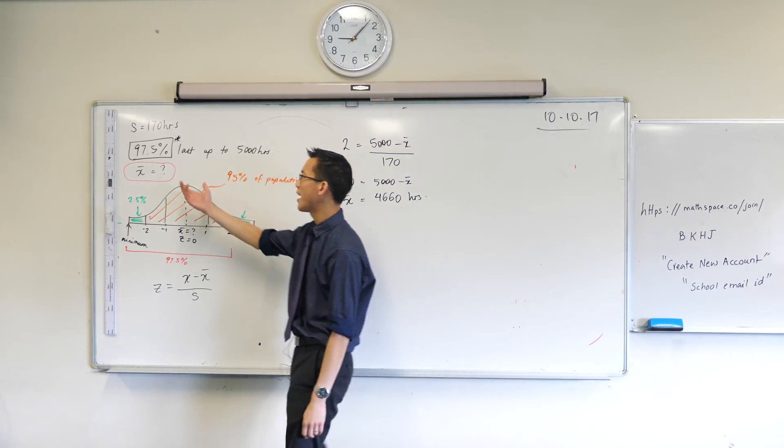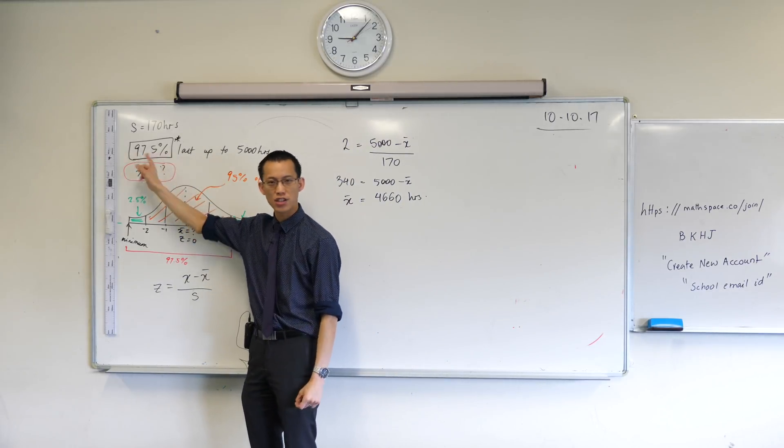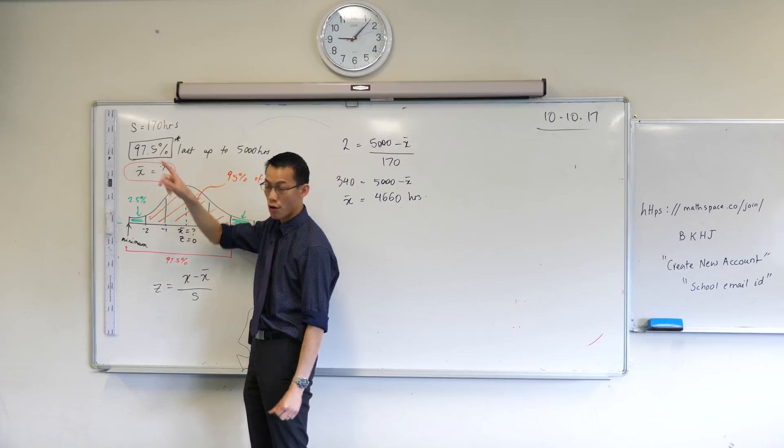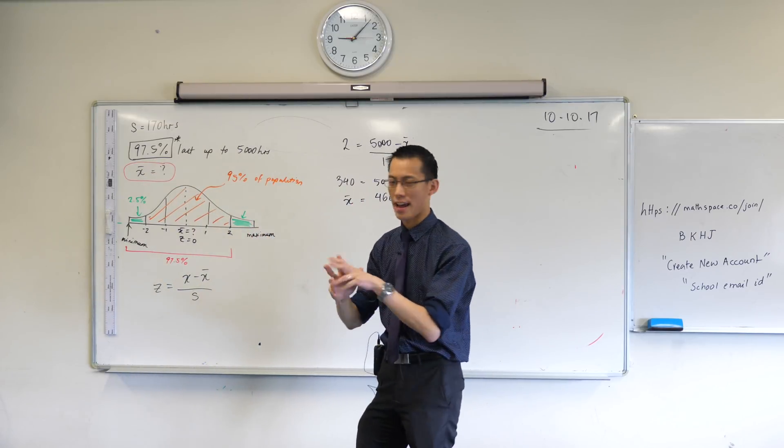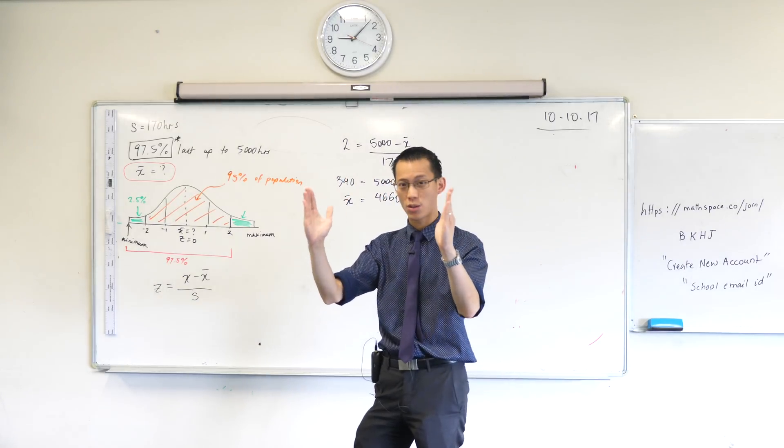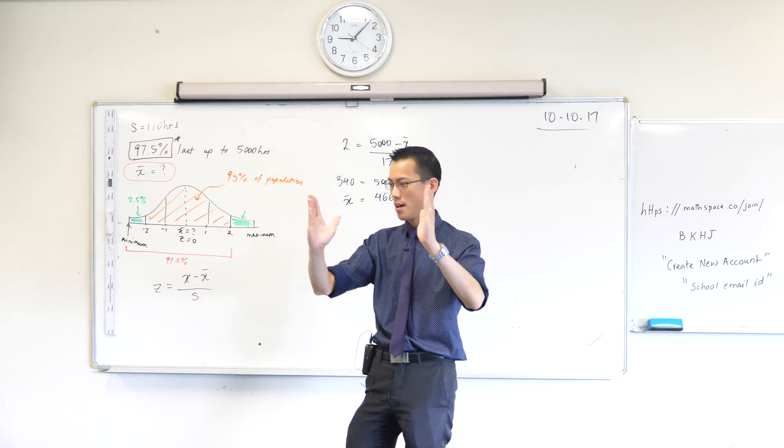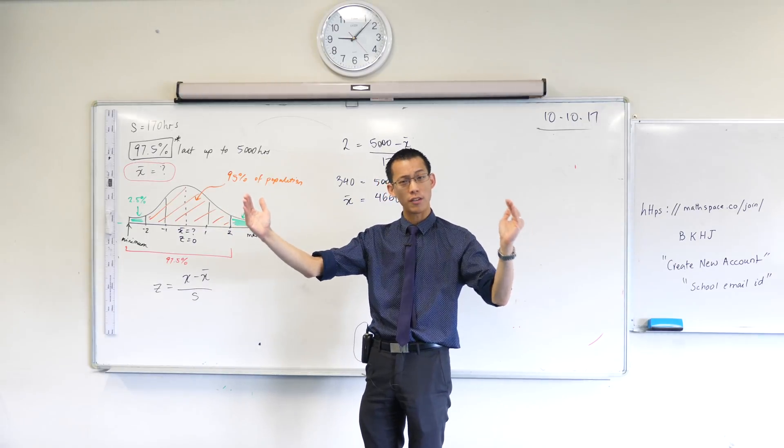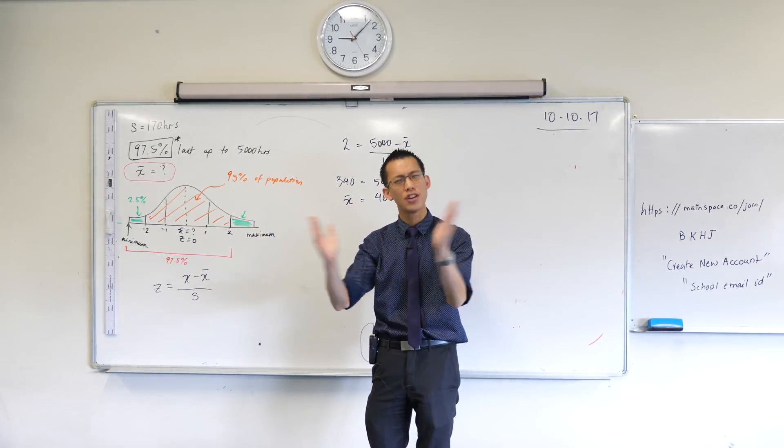When you're trying to work out some percentage of the population and you know the proportion that is permitted, then you're going to have to say, this number of standard deviations away, this z-score, negative 1 to 1 will give me this, negative 2 to 2 will give me this, and you work out which number is appropriate.